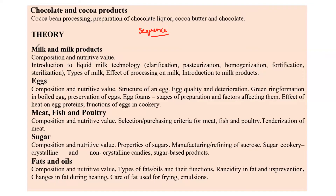Coming to milk and milk products, again sequence-type questions can come since multiple dairy products exist. Related terms like pasteurization, homogenization, and fortification are important processes used in milk processing technology. Temperatures and factors affecting the effectiveness of these techniques — including UHT — could also be asked, along with types of milk such as cow's milk, buffalo milk, standardized milk, double-toned milk, and half-and-half.